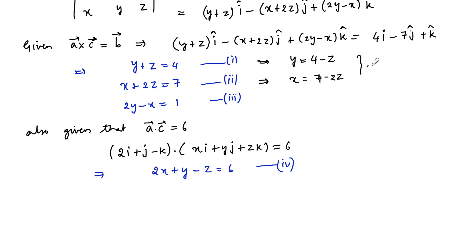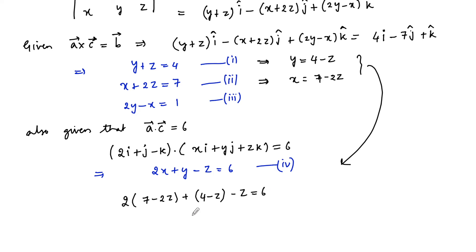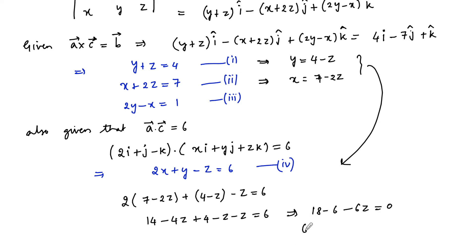Substituting these into equation 4: 2 times (7 minus 2z) plus (4 minus z) minus z is equal to 6. This gives 14 plus 4 minus 6z equals 6, so 18 minus 6z equals 6, which means 6z equals 12, therefore z is equal to 2.